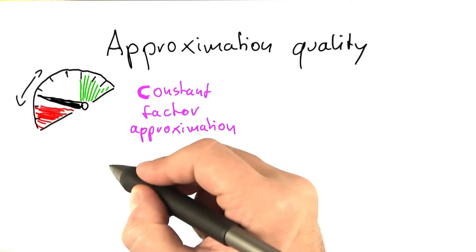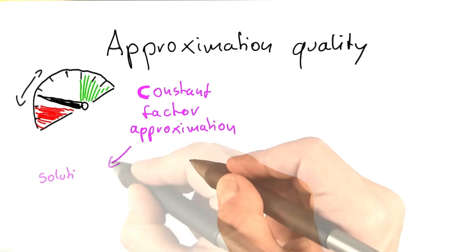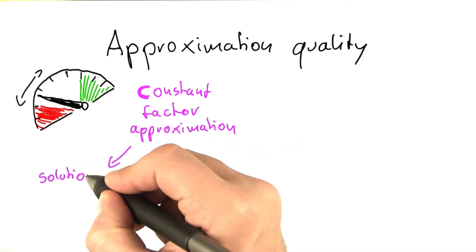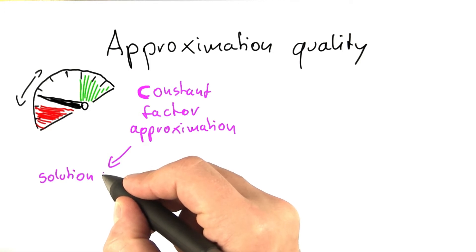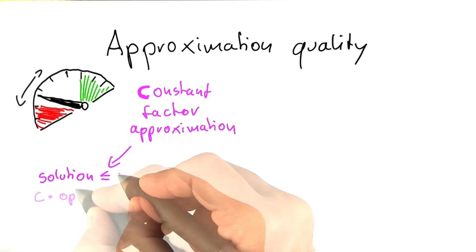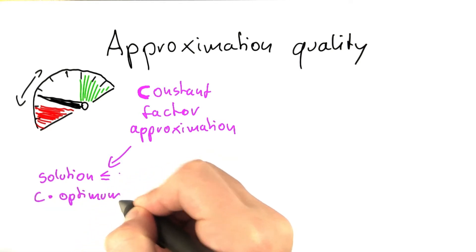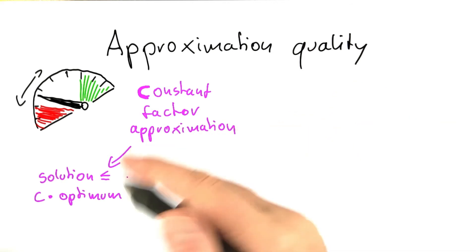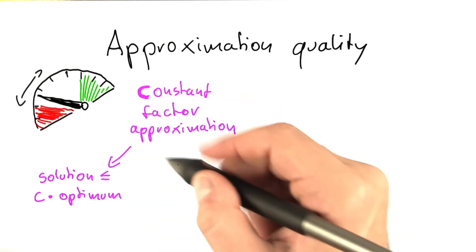So when you have an optimization problem where you want to minimize some quantity, this algorithm will guarantee you a solution that is no worse than c times the best possible solution. For a minimization problem, your solution will be less than or equal to c times the optimum, or the best possible solution. And that is a guarantee that this constant factor approximation gives you.